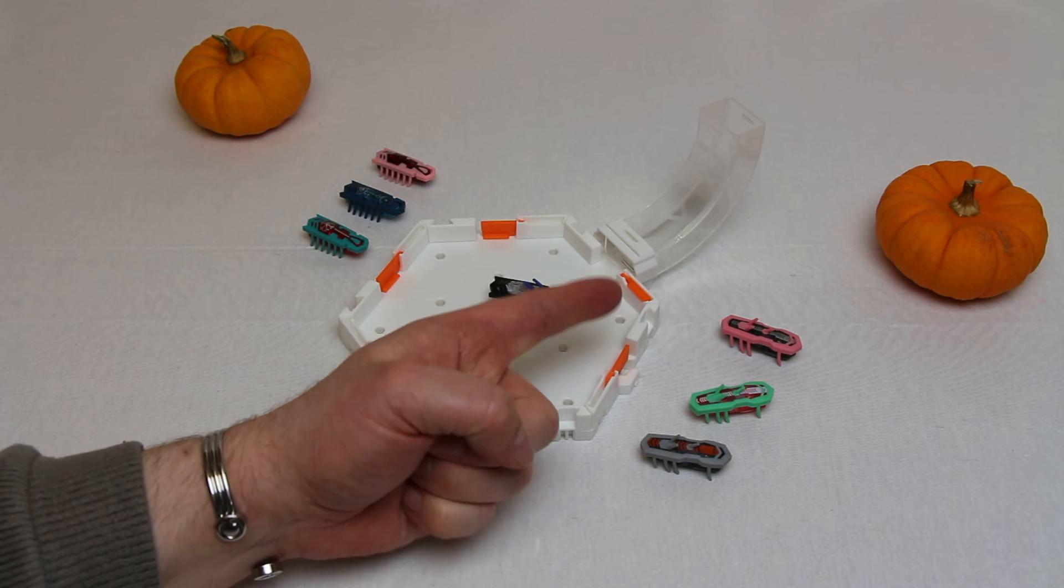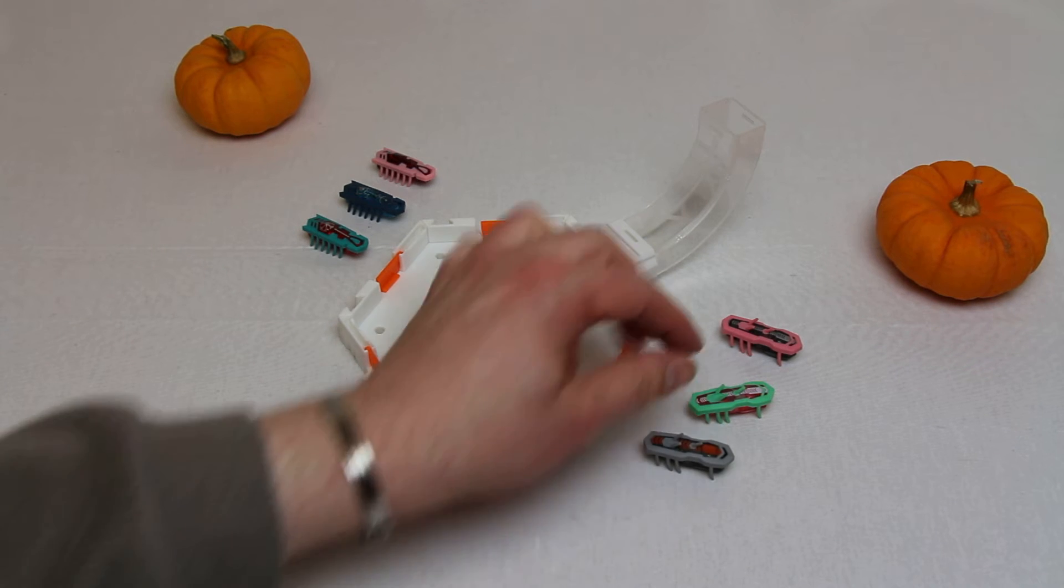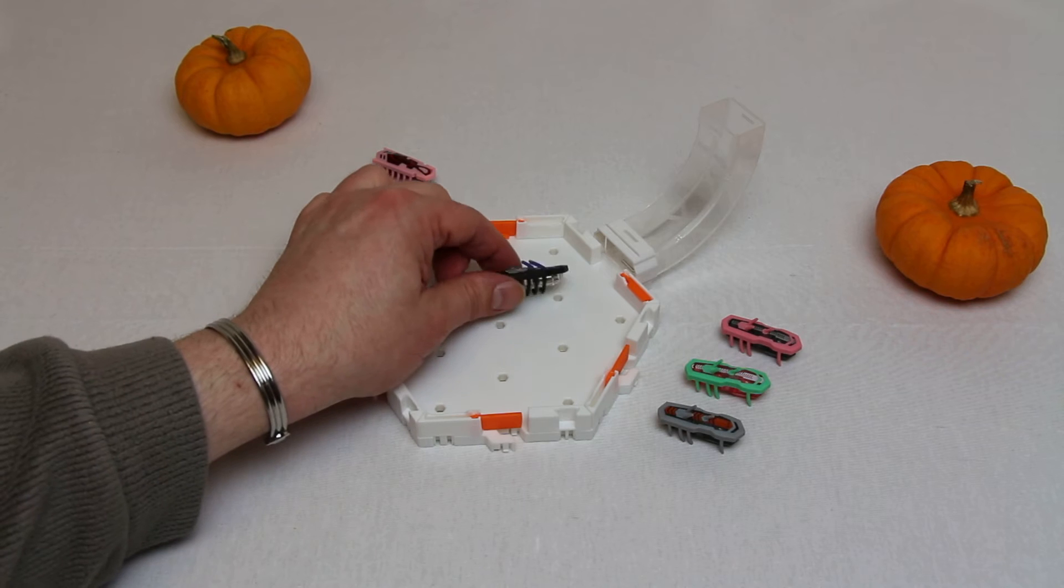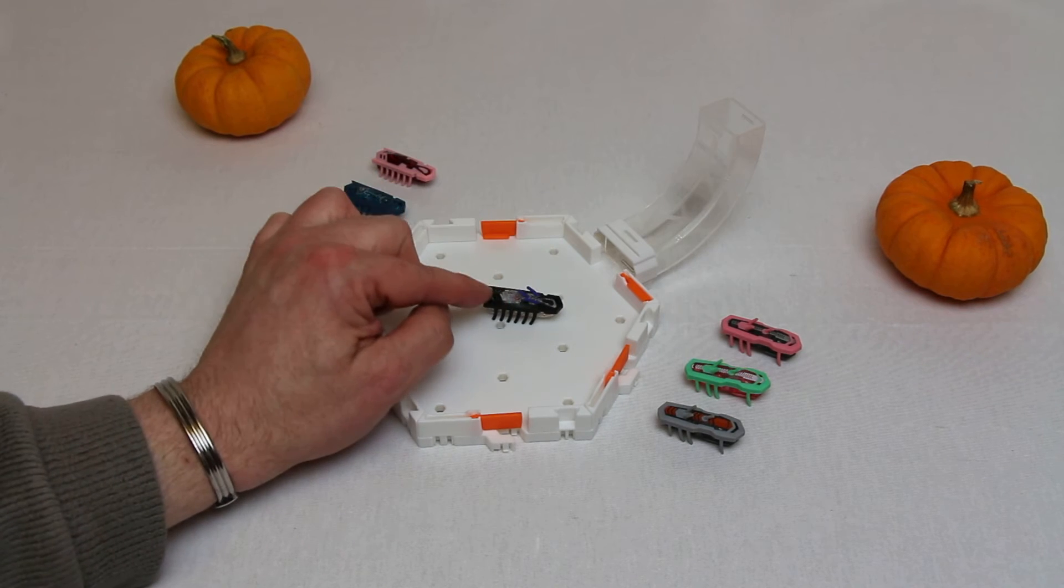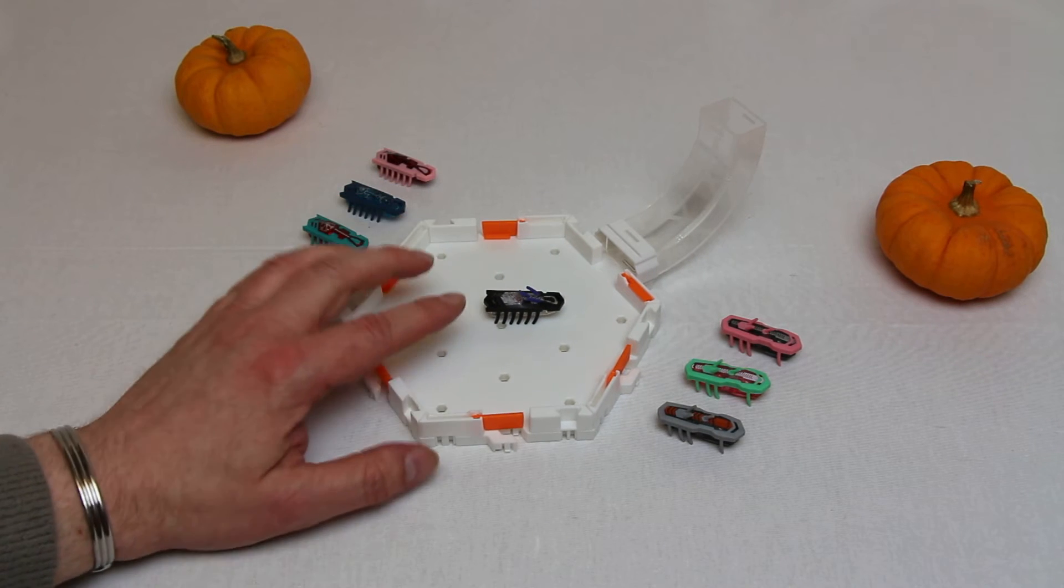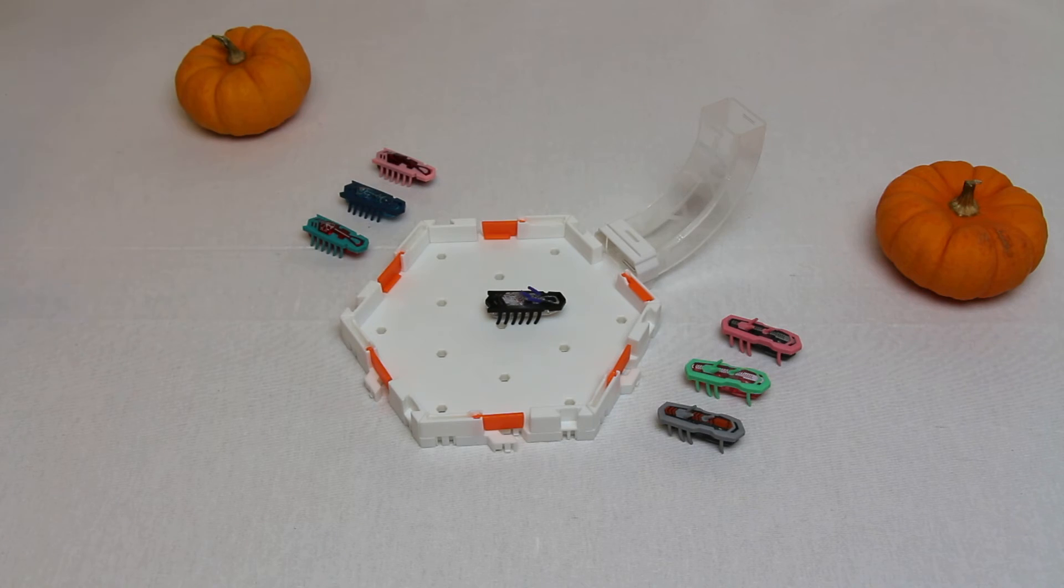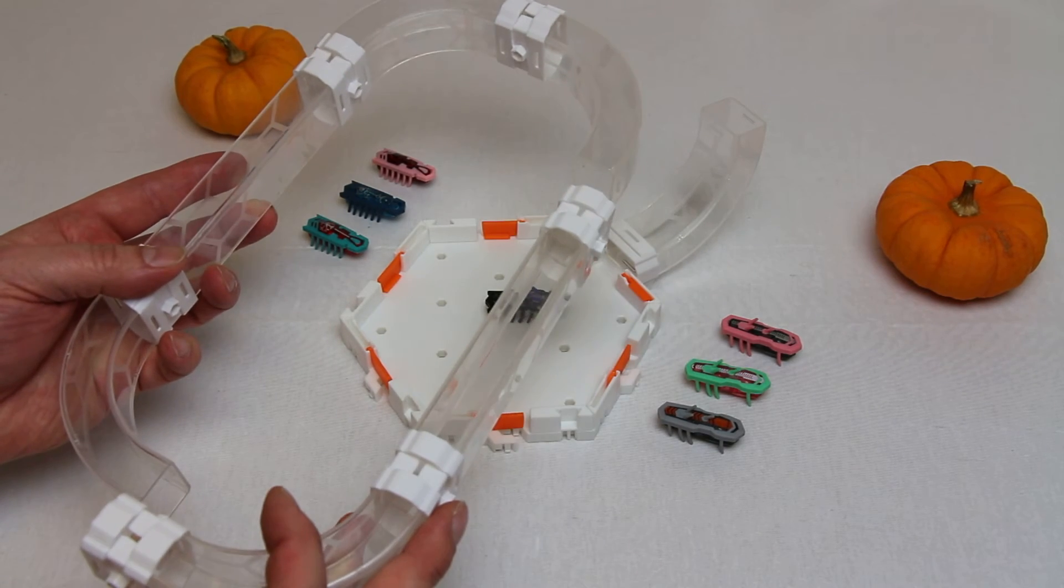So I've already shown in other videos that you can actually have these Hexbug V1s climb the V2 tube, but only when they're being pushed by a whole bunch of Hexbug V2. So this is quite different. This is actually him climbing on his own steam. Now what I'm going to do is I'm going to pop him into a closed loop.